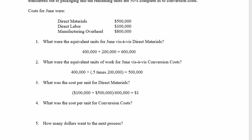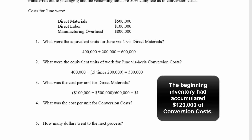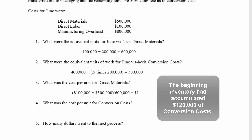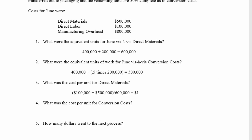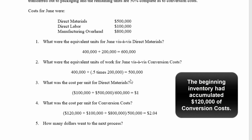Next, the problem wants to know our cost per unit for conversion costs. Pause the video and see if you can figure it out — remembering that we add last month's conversion costs into this month's costs, then divide by the equivalent units worth of work we did this month. Last month's conversion costs were $120,000. We add them to this month's conversion costs of $900,000 — that's where the weighted average comes from. So $120,000 plus $100,000 plus $800,000 divided by 500,000 equivalent units equals $2.04 for conversion costs.